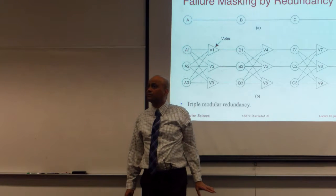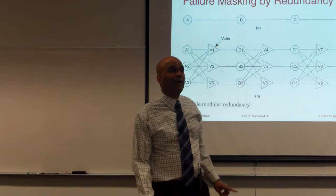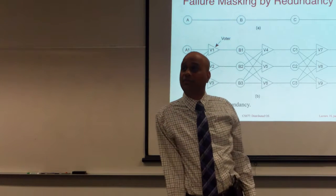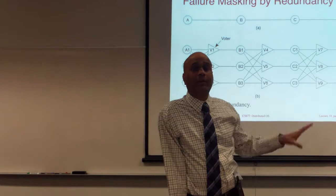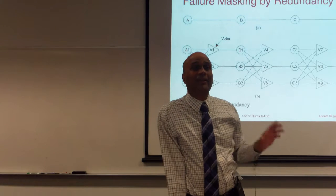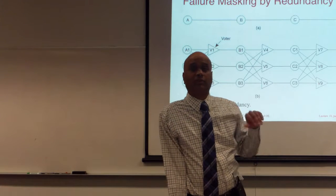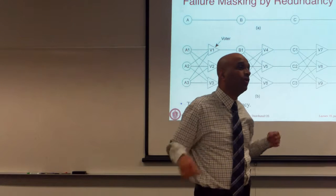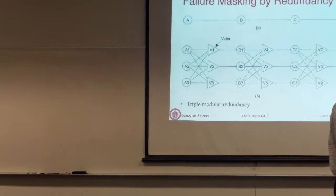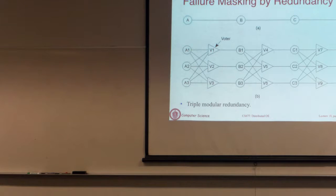A student asked if the voters should be fully cross-connected. The voter takes three outputs and produces the majority. If V2 fails, V1 and V3 produce the right result and feed the right input forward. At the next stage, whatever V2 fed will get discarded. This circuit is designed to handle one failure at a time — one failure in every stage. This is called triple modular redundancy, TMR. To deal with one Byzantine fault you need three times the replication.